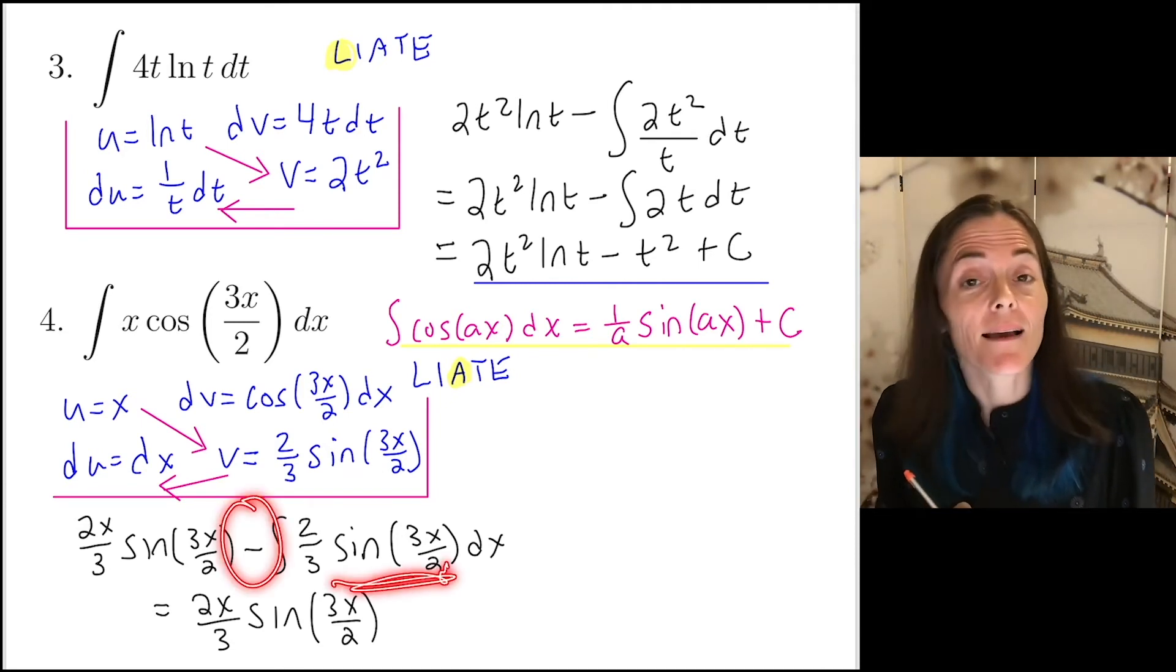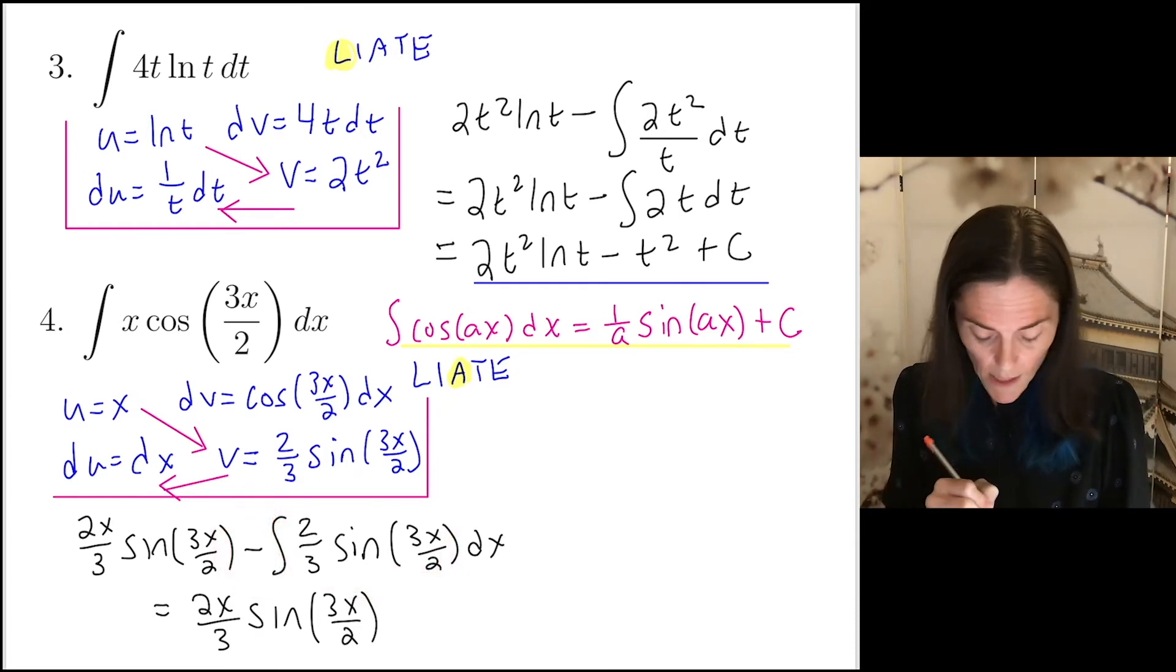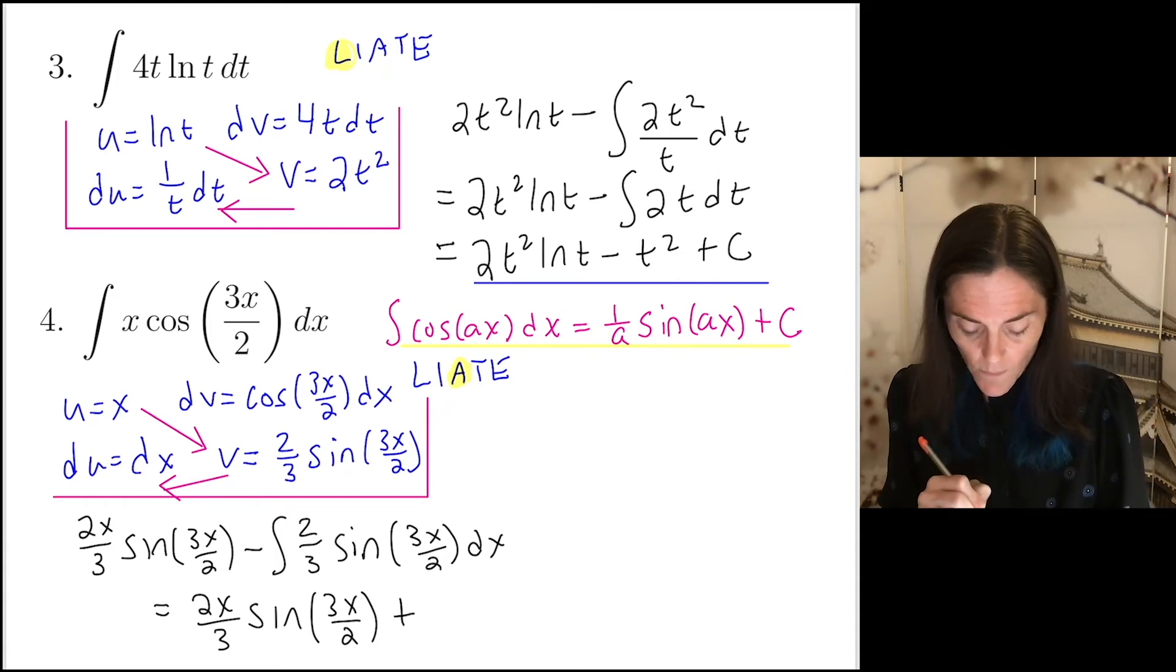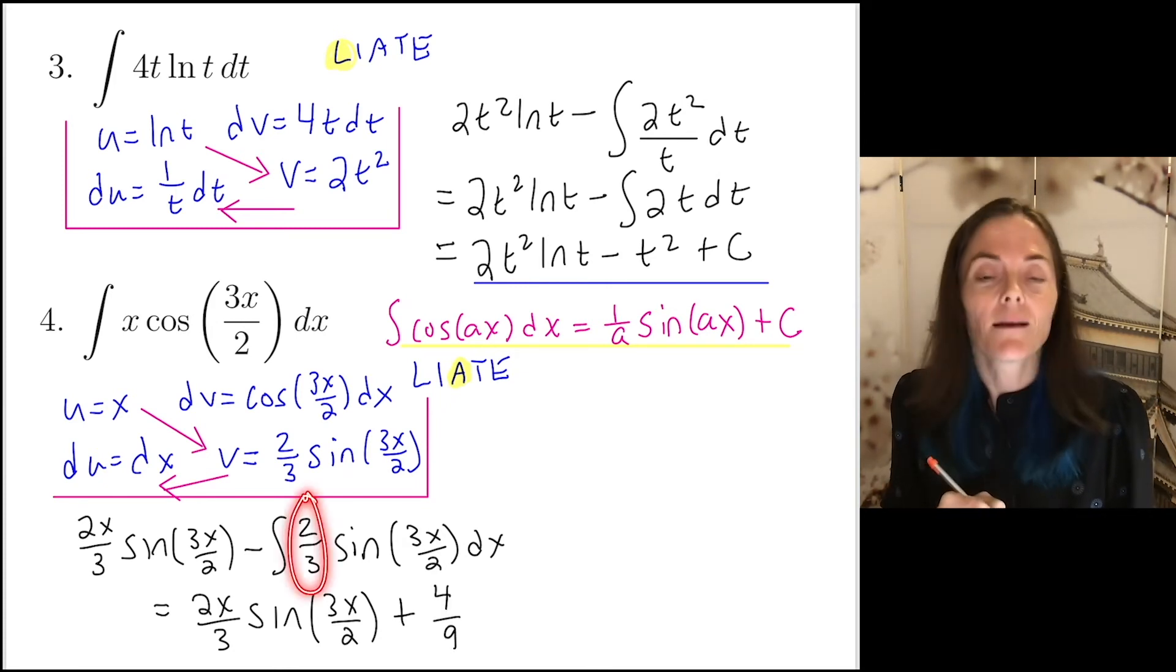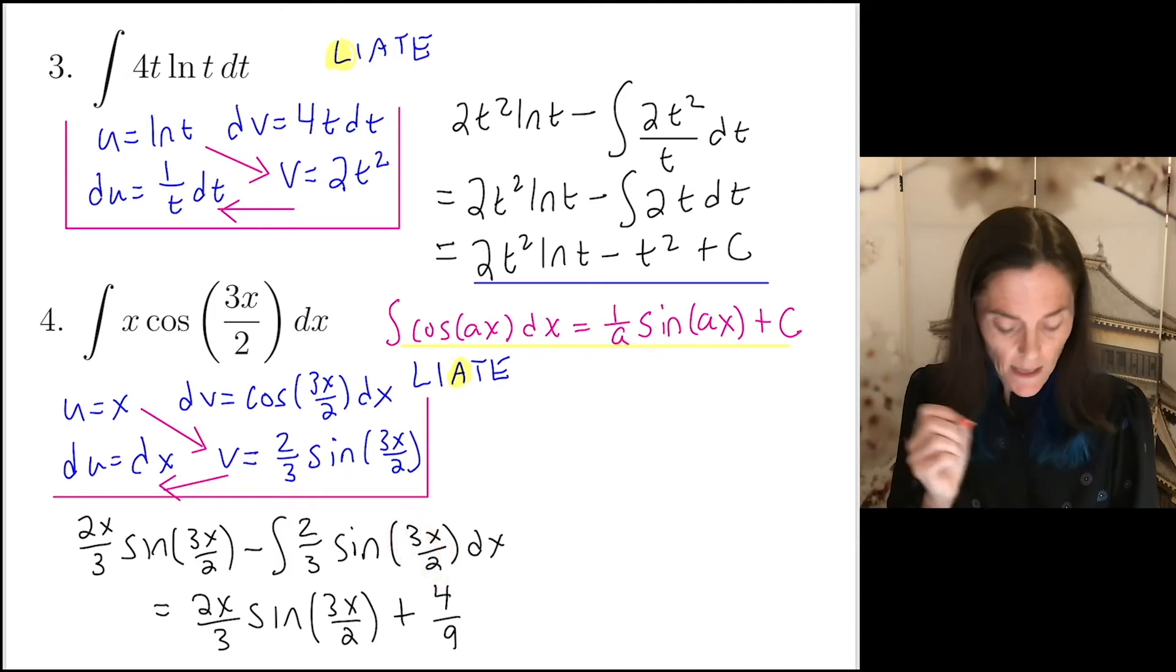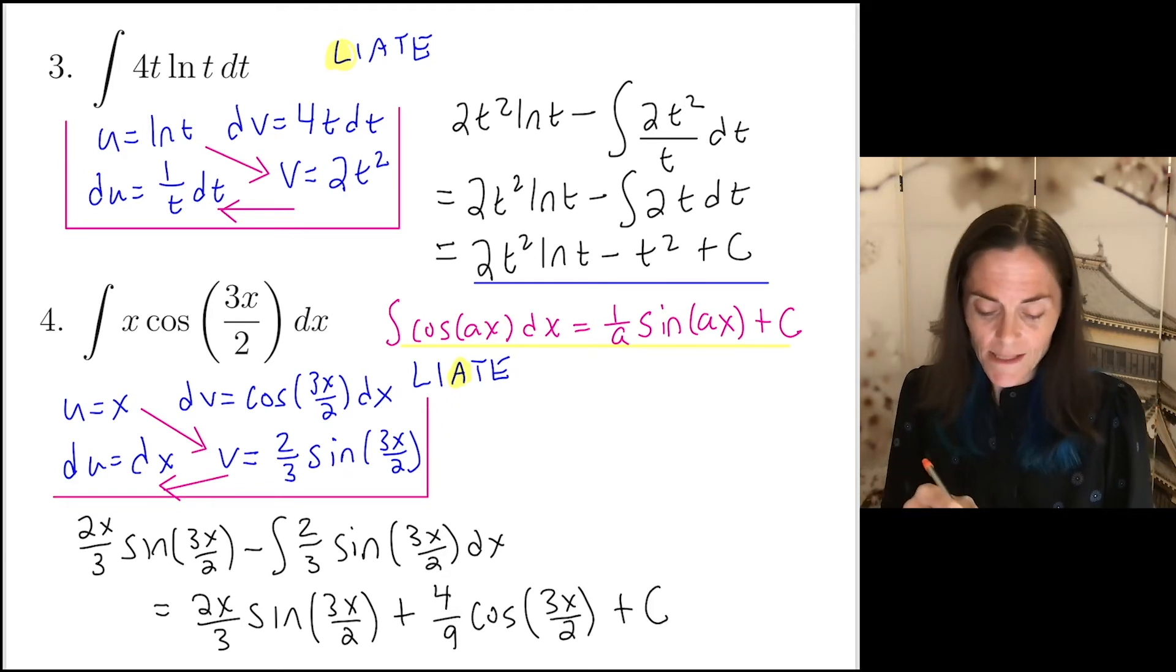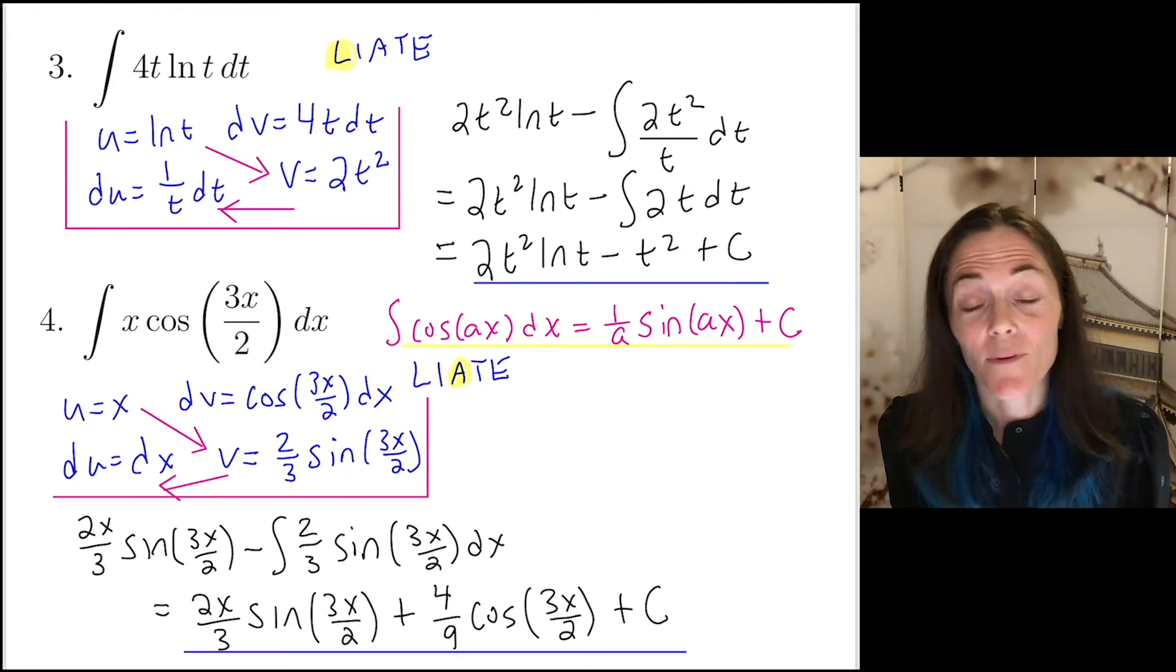Now, thinking about the sign, we have a negative. When we integrate the sine, we get negative cosine. So we're going to have another negative altogether. This is going to be plus. And then we will have 2 over 3 times 2 over 3. This will be 4 over 9. The first 2 over 3 is here. The second 2 over 3 in this product comes when we integrate. And we have this 1 over a coming out. And then we have cosine 3x over 2. And at the very end, we put plus c. So this is the answer to number 4.